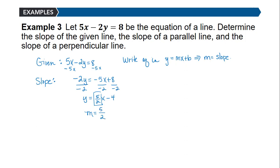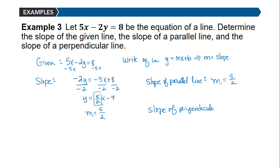Lines that are parallel have the same slope, so a line parallel to this has slope 5/2. For a perpendicular line, we need the negative reciprocal of 5/2, which is the opposite of 2/5, giving negative 2/5. So the slope of a perpendicular line is negative 2/5.